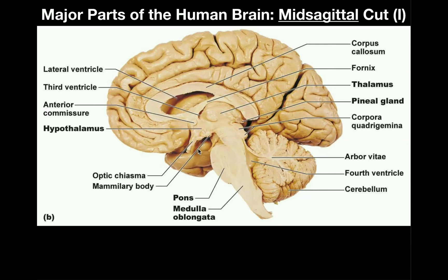Directly anterior to the pituitary gland, we have the optic chiasma, which is where the optic nerves cross over. So directly underneath the hypothalamus, from anterior to posterior, we have the optic chiasma, the pituitary gland (not shown here), and the mammillary body.